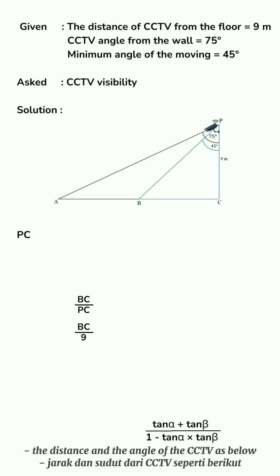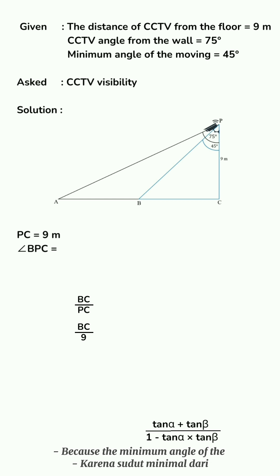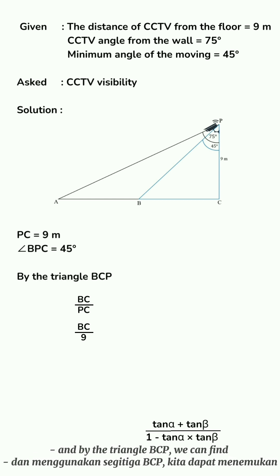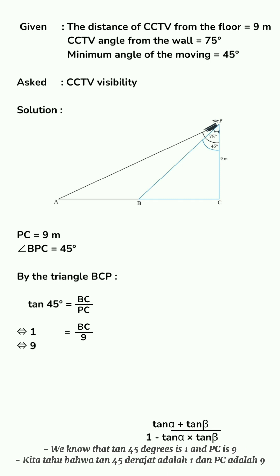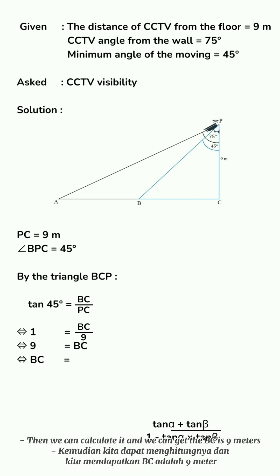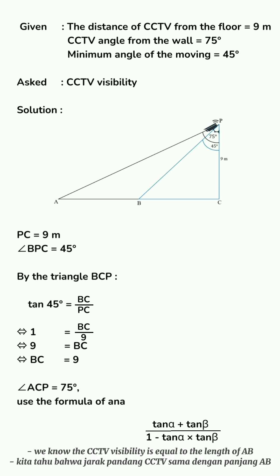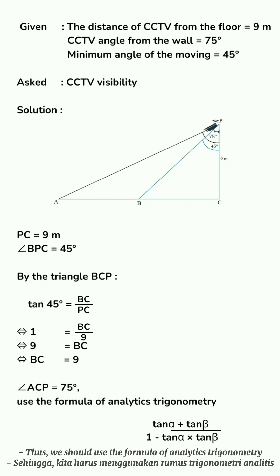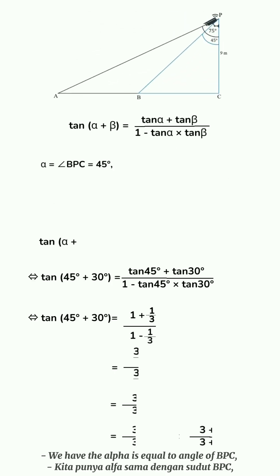We illustrate the distance and angle of the CCTV to get a triangle. We know PC (distance from floor) = 9 meters. Since the minimum angle of CCTV movement is 45 degrees from the wall, angle BPC = 45 degrees. Using triangle BCP and trigonometry: tan 45° = BC/PC. Since tan 45° = 1 and PC = 9, we get BC = 9 meters. The CCTV visibility equals the length of AB. Looking at triangle ACB where the angle is 75 degrees, we use the addition formula of trigonometry.